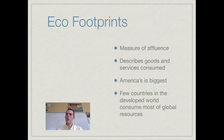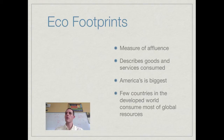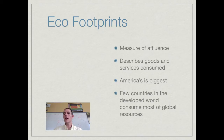Now let's tie this to eco footprint. Eco footprint is a measure of the goods and resources used by a person. It is measured in hectares — a unit of land — and basically talks about how much land is needed to support a person's lifestyle, to produce their goods and take their waste. An eco footprint can also be said to be a measure of affluence, which is just the wealth a person has. Generally, people who are more affluent have more things, consume more goods, and produce more waste, so their eco footprint is bigger.